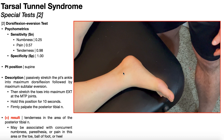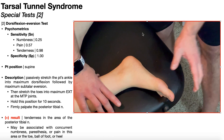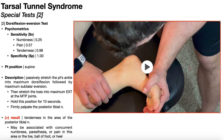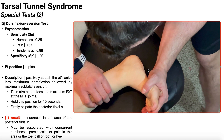The patient is positioned in supine with the right lower extremity externally rotated to expose the tarsal tunnel. To perform the test, the PT passively stretches the patient's ankle into maximum dorsiflexion, maximum subtalar eversion, and stretches the toes into extension at their MTP joints. This position puts the most stretch on the tarsal tunnel at the medial aspect of the ankle where the tibial nerve resides. Hold this position for about 10 seconds.